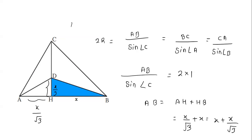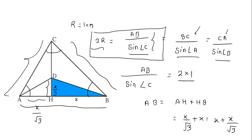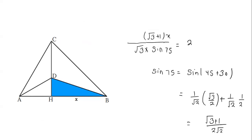We know the circumradius R = 1 cm. The sine rule states 2R = AB/sin C = BC/sin A = CA/sin B. Taking the first ratio: 2 × 1 = AB / sin C. AB = AH + HB = X/√3 + X = (√3 + 1)X / √3. The angle C is 75 degrees, so the denominator is sin 75.